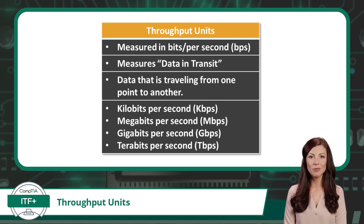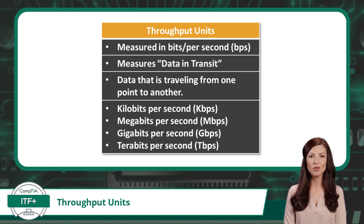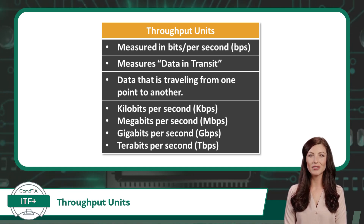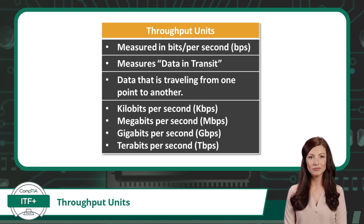We also have megabits per second, which are quantities measured in millions of bits per second. Throughput rates in this range are common for internet connections in rural areas using slightly outdated technologies, where throughput rates are limited as a cost-saving measure, or where limited network infrastructure exists.